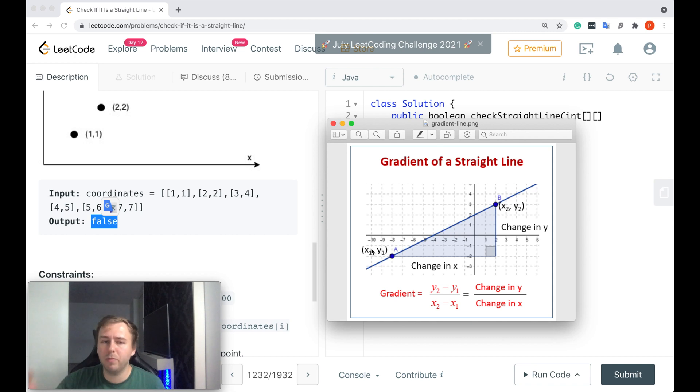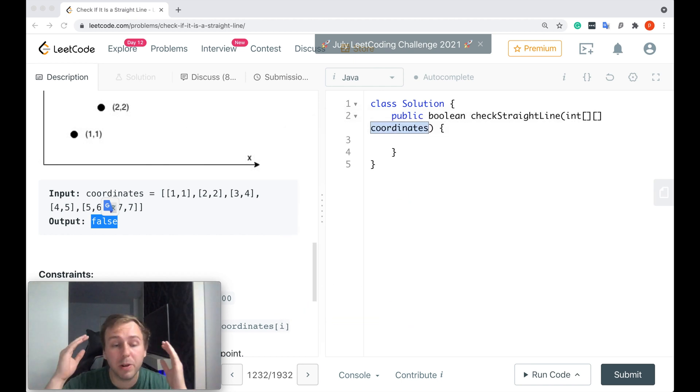This is basically what you need to do: take the points, calculate the first gradient, iterate through the rest, calculate all the other gradients for the rest of the points, compare if all of them are the same - if they are, return true. If they are not the same, or one of them is not the same, just return false straight away. Now we know what to do and how to do it. However, we don't know yet how to code it. If you want to figure out how to code it, just stay with me guys and I will quickly write the code and go through it with you. Just stay with me.